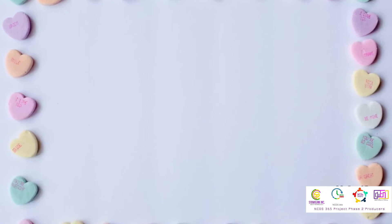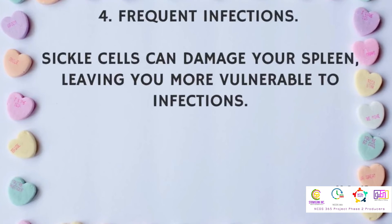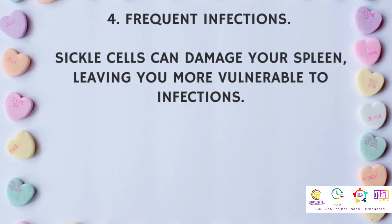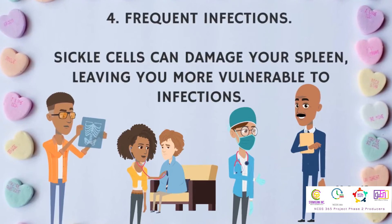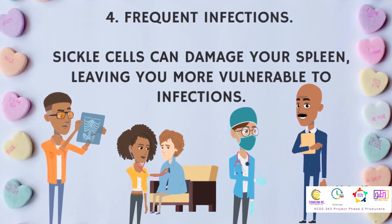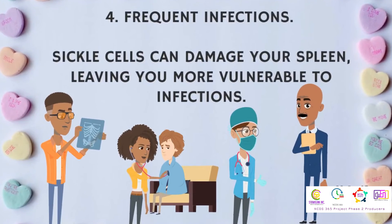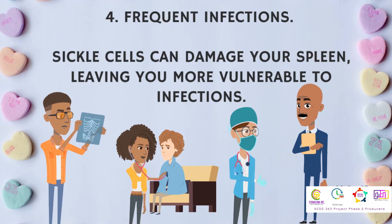Number four: frequent infections. Sickle cells can damage your spleen, leaving you more vulnerable to infections.